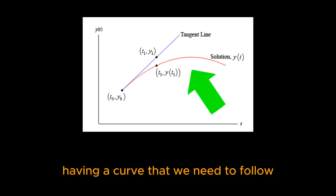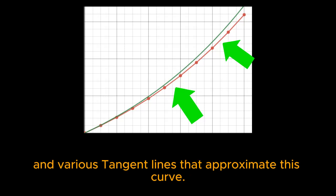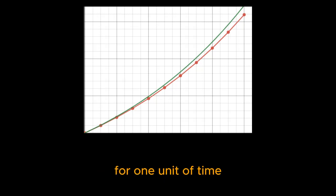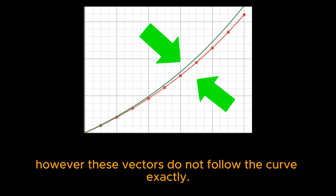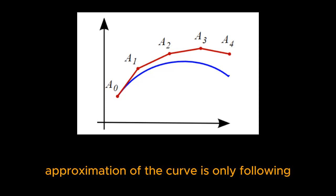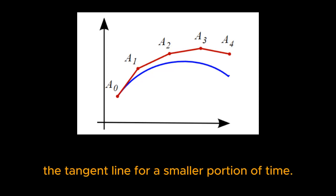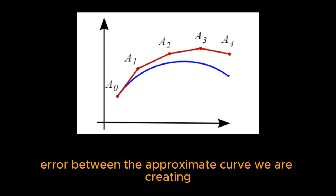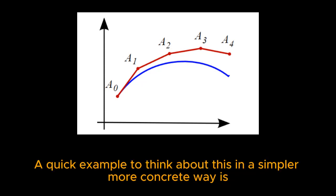Euler's method begins by having a curve that we need to follow, and various tangent lines that approximate this curve. These tangent lines tell us what direction to go in for one unit of time. However, these vectors do not follow the curve exactly. What we can do to create a more accurate approximation of the curve is only following the tangent line for a smaller portion of time. This would reduce the amount of error between the approximate curve we are creating and the curve we need to follow.